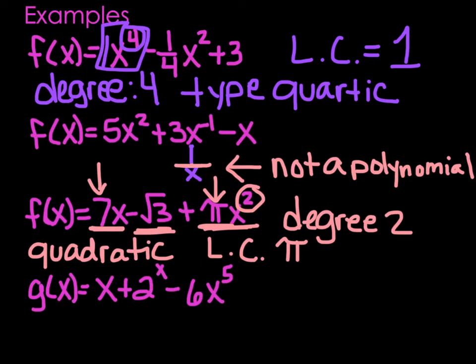The last one: g of x equals x plus 2 to the x power minus 6x to the 5th power. We have an x in the exponent position, and that does not fall under the definition of polynomials. So this is not a polynomial.